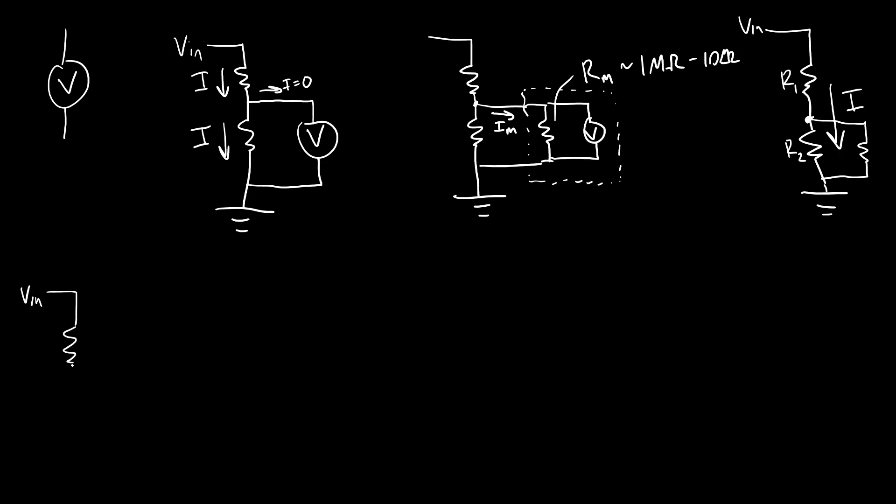And if you remember our voltage divider equation from a previous video, if we have a voltage divider with resistors R1 and R2, and Vout there, then Vout is equal to R2 over R1 plus R2 times Vin. So we see that as R2 gets really, really large, this fraction approaches one, and Vin will approach Vout.